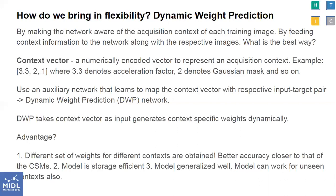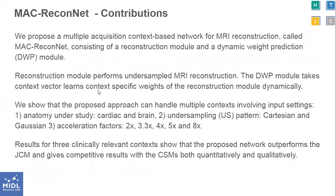The advantage is that we get a different set of weights for different contexts and better accuracy. The model is also storage efficient and generalizes across unseen contexts. We propose a multiple acquisition context-based network for MR reconstruction called MacReconNet, consisting of a reconstruction module and a dynamic weight prediction module. The reconstruction module performs undersampled MR reconstruction, while the dynamic weight prediction module takes the context vector as input and learns context-specific weights of the reconstruction module dynamically. We show that the proposed network outperforms JCMs and gives competitive results with context-specific models both quantitatively and qualitatively across three clinically relevant contexts.